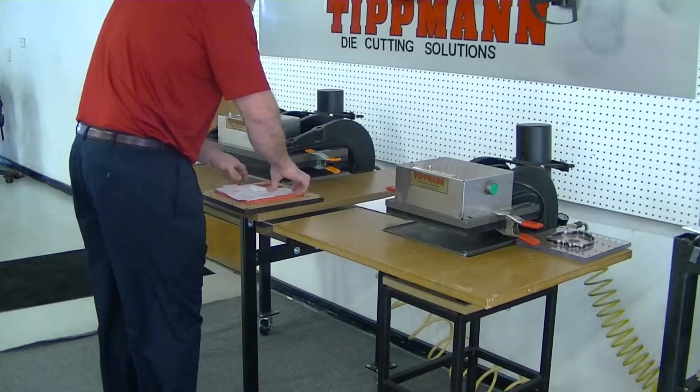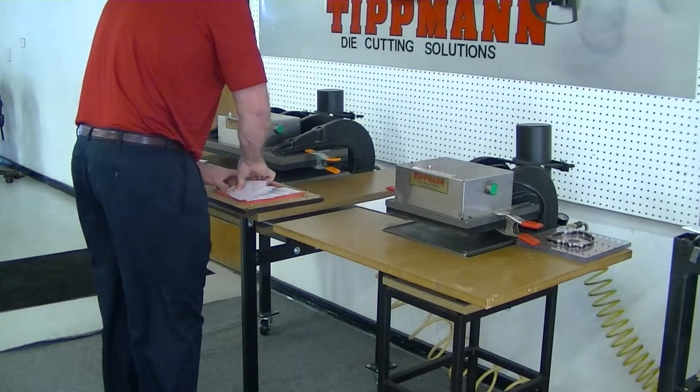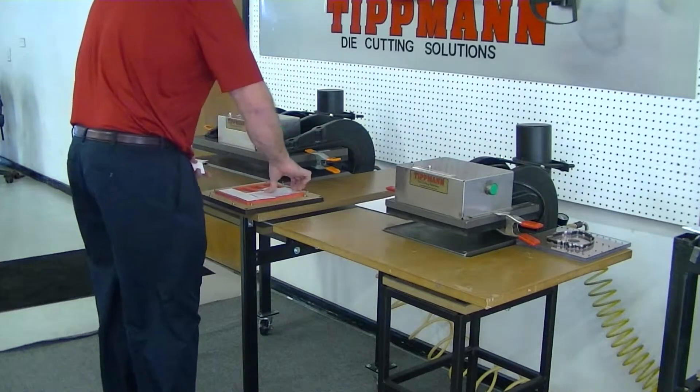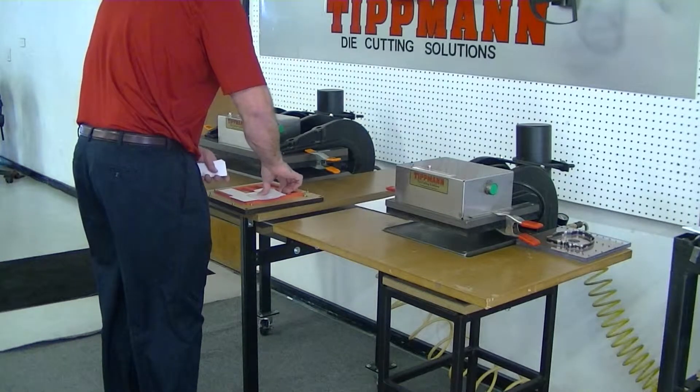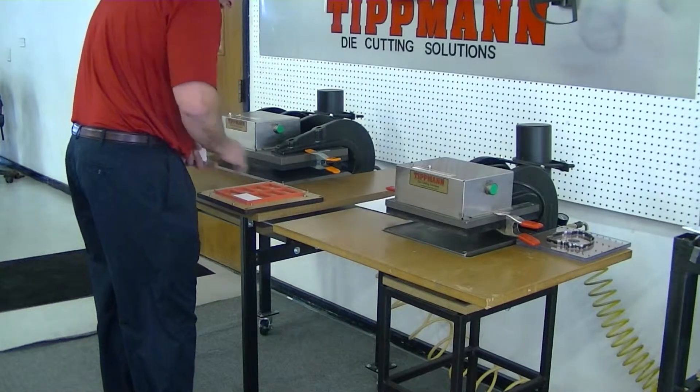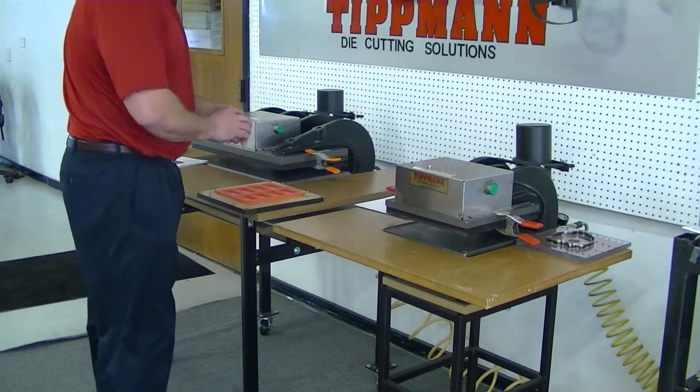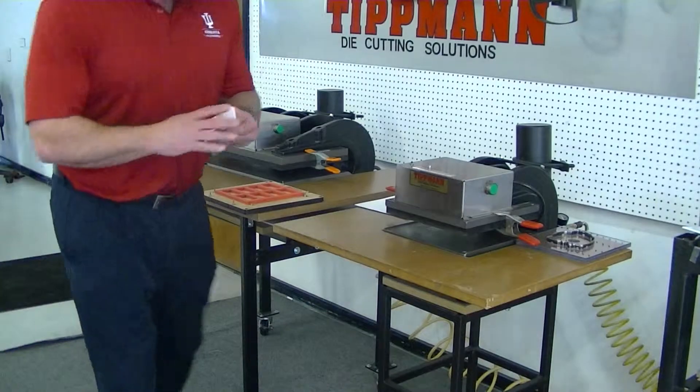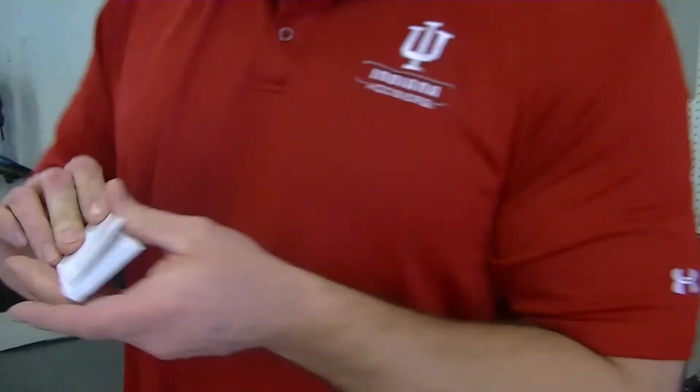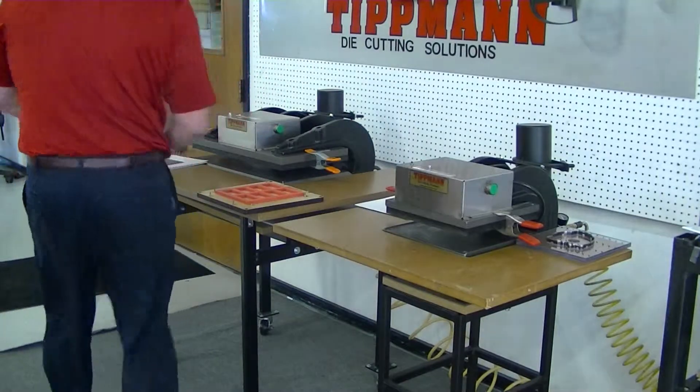Right there, I cut through four layers of the card stock. So, I actually cut 64 business cards with one cycle of the press. You can see, I got a nice clean cut. There are 64 business cards cut with one cycle of the press.